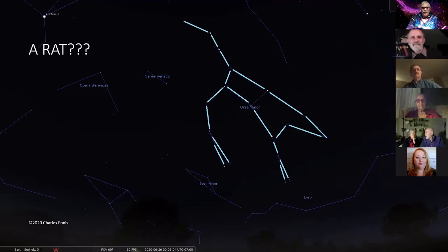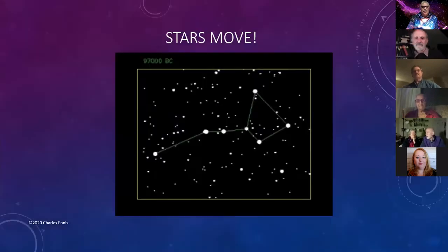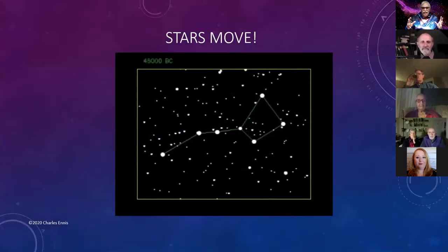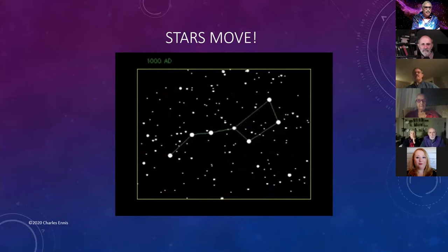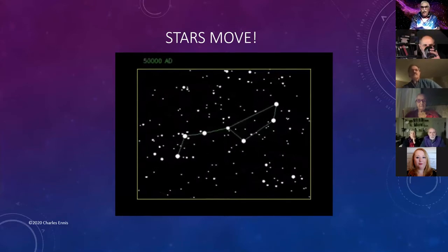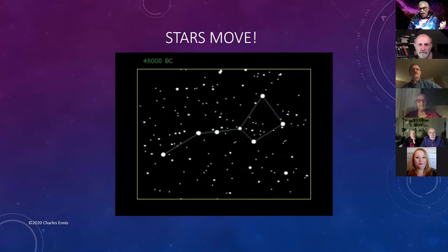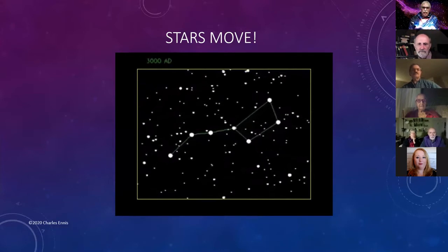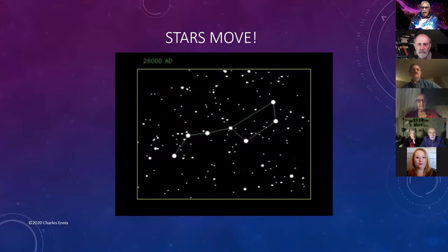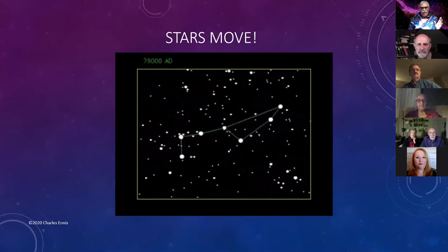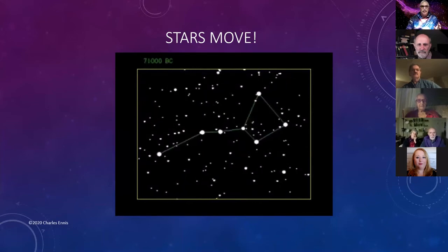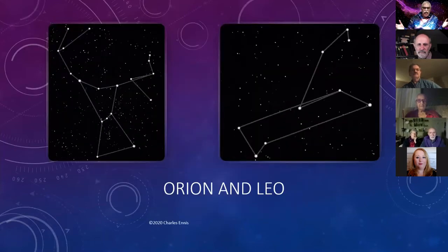We know that the stars have moved, so it probably looked more like a bear in the past. This is a time lapse going from 100,000 years before Common Era to 100,000 after, and you can see how the stars in the Big Dipper are moving. All of the stars in the sky have velocities — they all move. I'll show you Orion and Leo; you can see how those stars are all moving.